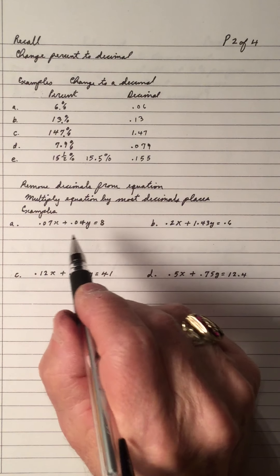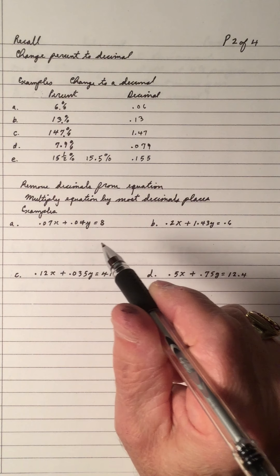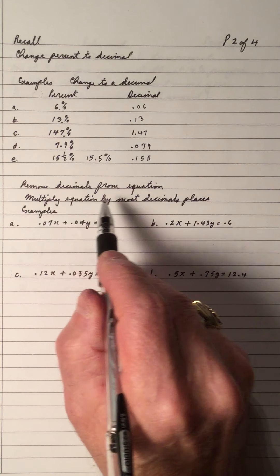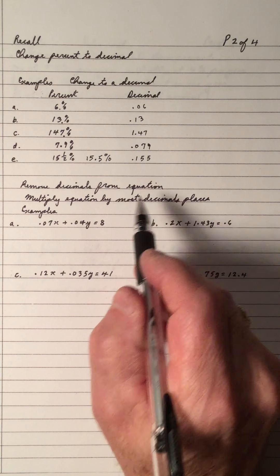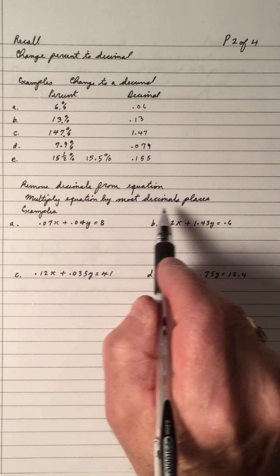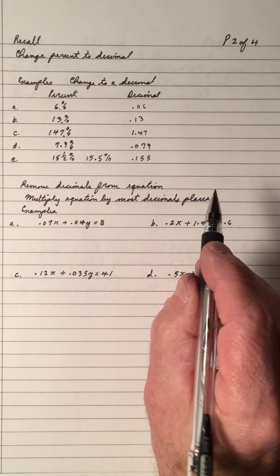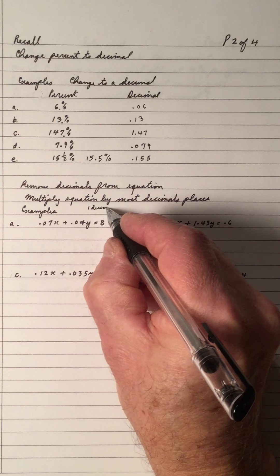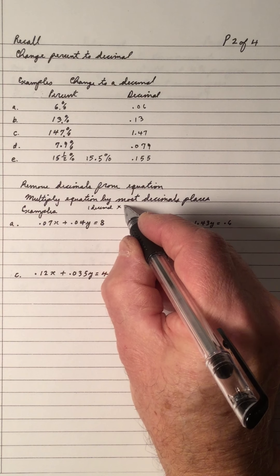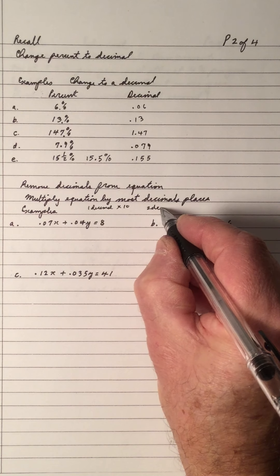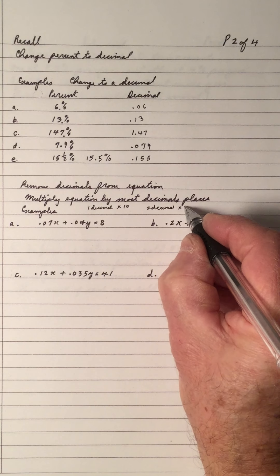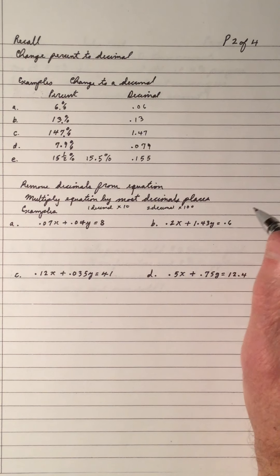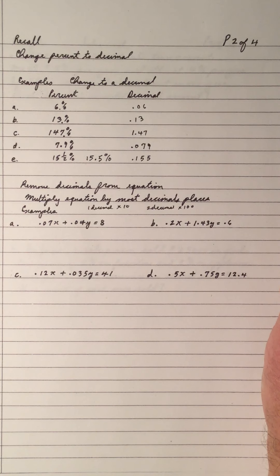Another technique: when we have equations with decimals from percentages, we can remove the decimals by multiplying the whole equation by 10, 100, or 1000 — depending on the most decimal places present. If you have one decimal place, multiply by 10; two decimal places, multiply by 100; three decimal places, multiply by 1000.